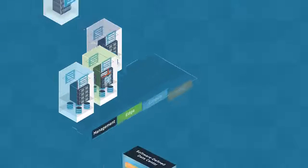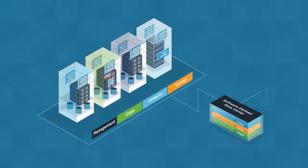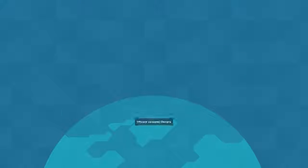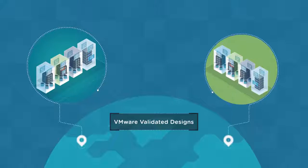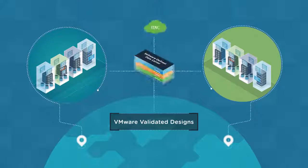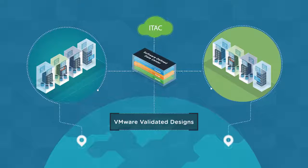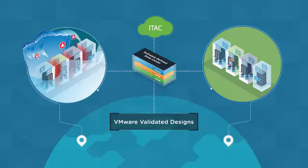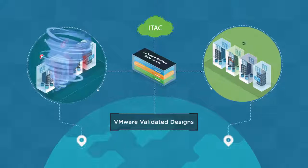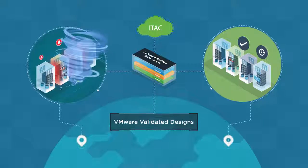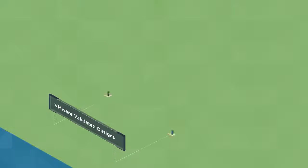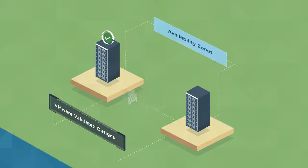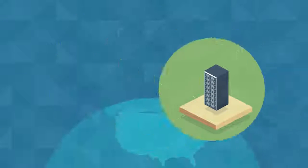The dual region model of the IT Automation Cloud VMware Validated Design extends the software-defined data center across geography, protecting against catastrophic events and ensuring uptime and availability. VMware Validated Designs are built on the concepts of availability zones and regions.